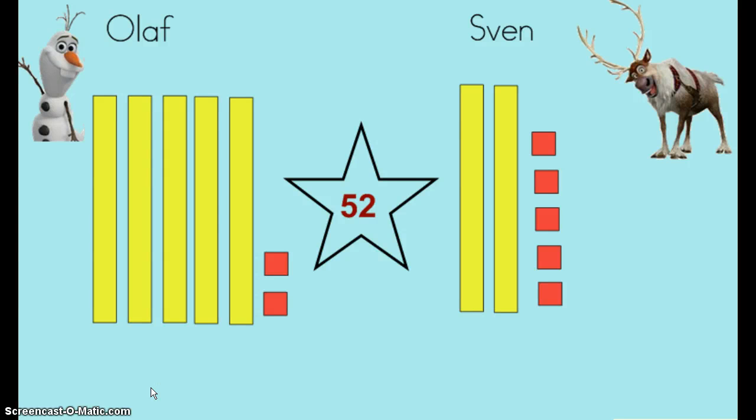Time for your homework question. Pull out your homework sheet. Your question should say, who counted 52 correctly? I asked two of your favorite Frozen characters to show me the number 52. Olaf showed the number 52 this way and Sven showed the number 52 this way.